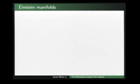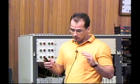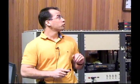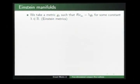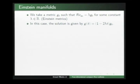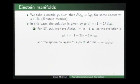A simple example of Ricci flow starts with a round sphere with standard metric. In this case, the metric evolves by shrinking homothetically to a point in finite time. More exactly, if we consider the Ricci curvature of g₀ equals λg₀ for some constant λ — these metrics are known as Einstein metrics — then the evolution is given by g(t) = (1 − 2λt)g₀. For a round sphere, this becomes g(t) = (1 − 2(n−1)t)g₀, and the sphere collapses to a point at time t = 1/(2(n−1)).